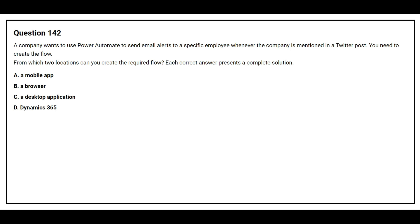Question number 142. A company wants to use Power Automate to send email alerts to a specific employee whenever the company is mentioned in a Twitter post. You need to create the flow. From which two locations can you create the required flow? Option A: a mobile app. Option B: a browser. Option C: a desktop application. Option D: Dynamics 365.